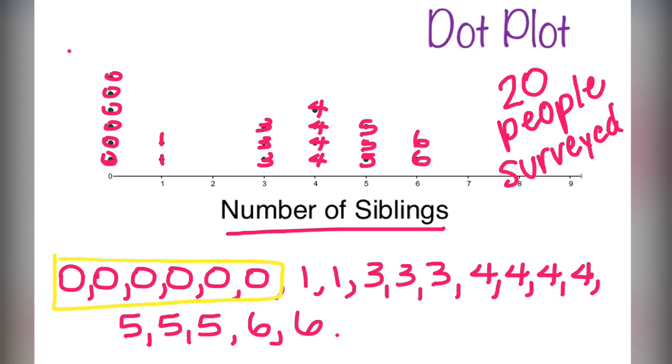Blocking off just the chunks so you can see it horizontally as the graph shows it vertically: the zeros, the ones, the threes, the fours, the fives, and the sixes. Noticing, nobody in this survey has only two siblings.